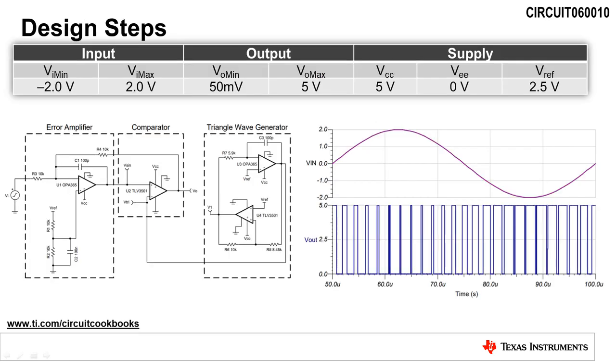Since many PWM circuits are used in audio applications, the design goal for this circuit is to convert an input voltage of negative 2 volts to 2 volts audio signal to a 50 millivolt to 5 volt 500 kilohertz PWM output. The duty cycle of the output will vary from slightly less than 100% for a negative 2 volt input to slightly more than 0% for a 2 volt input. The circuit is designed to use a single 5 volt supply and a reference voltage of 2.5 volts.